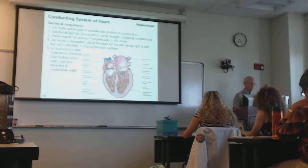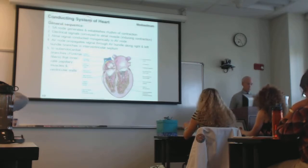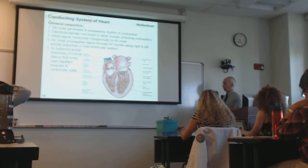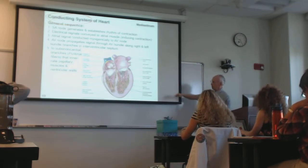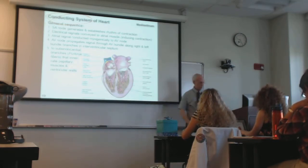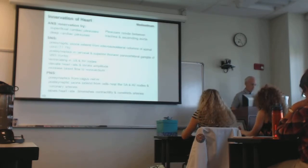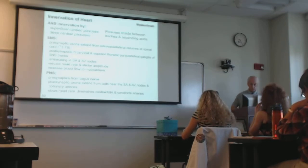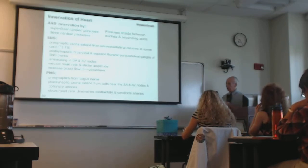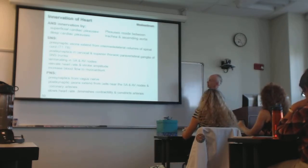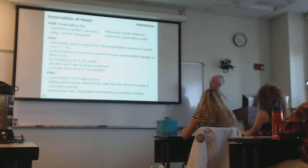You already know the conducting system — be familiar with the SA node, AV node, bundle of His, branch fibers, and Purkinje fibers. Make sure you understand the autonomic innervation of the heart, including the pre-synaptic and post-synaptic pathways for sympathetic innervation and the parasympathetic (vagal) innervation.